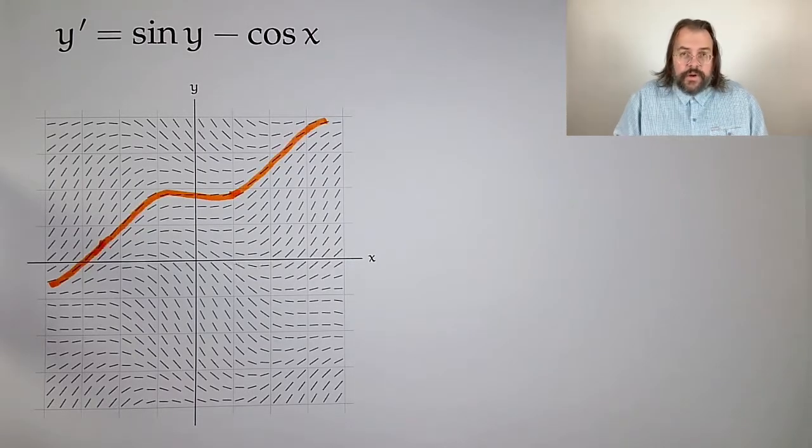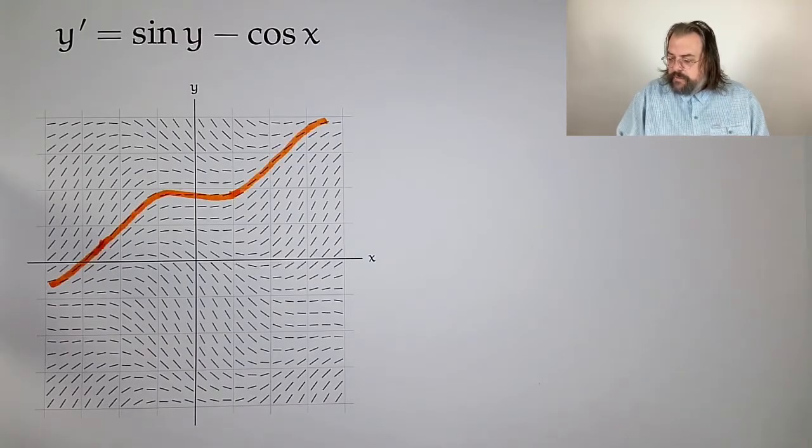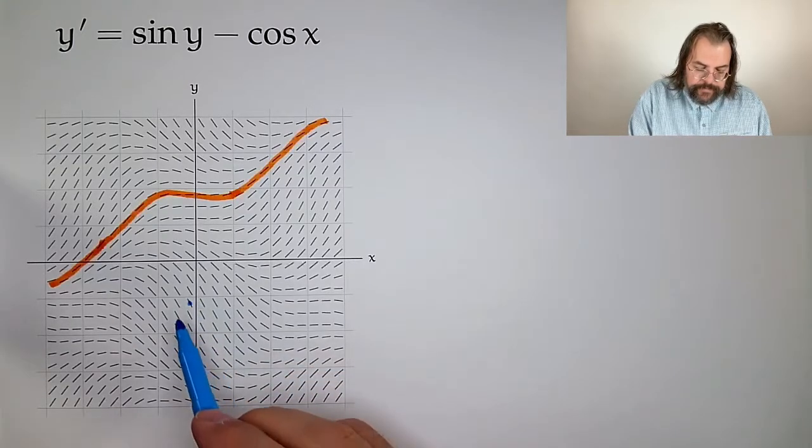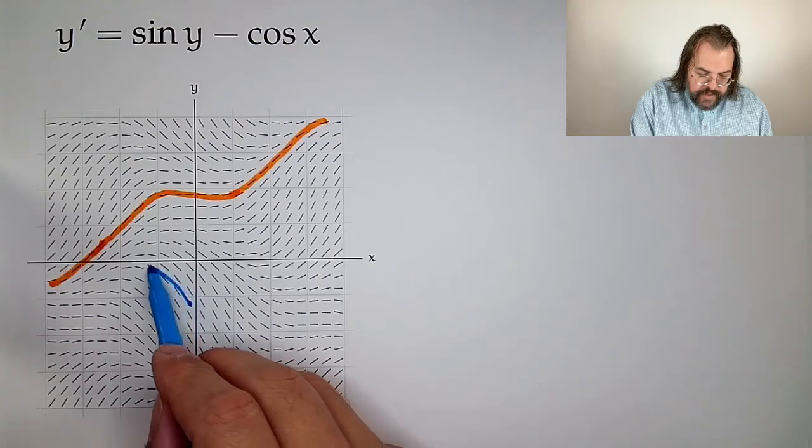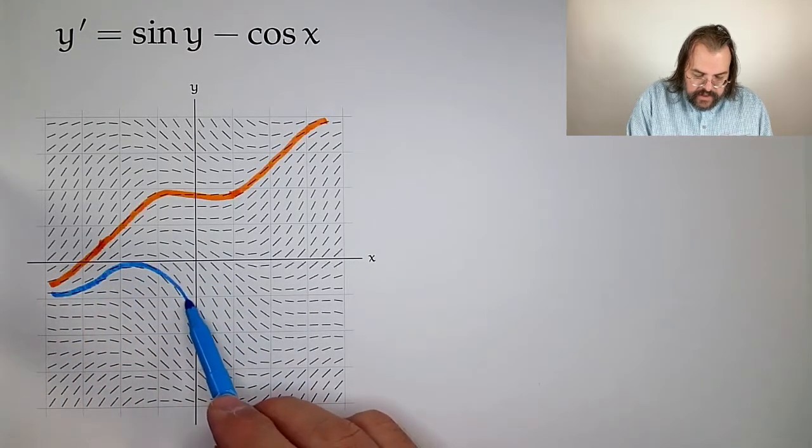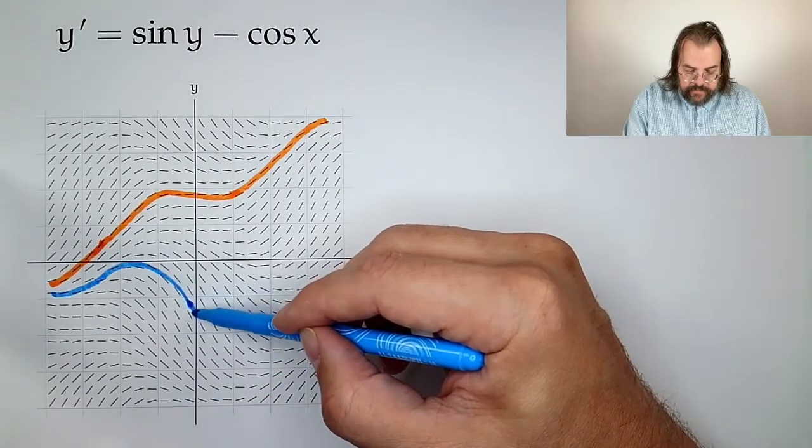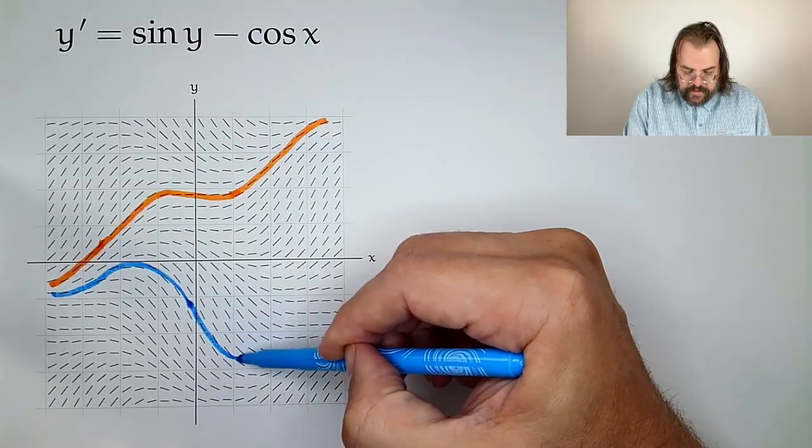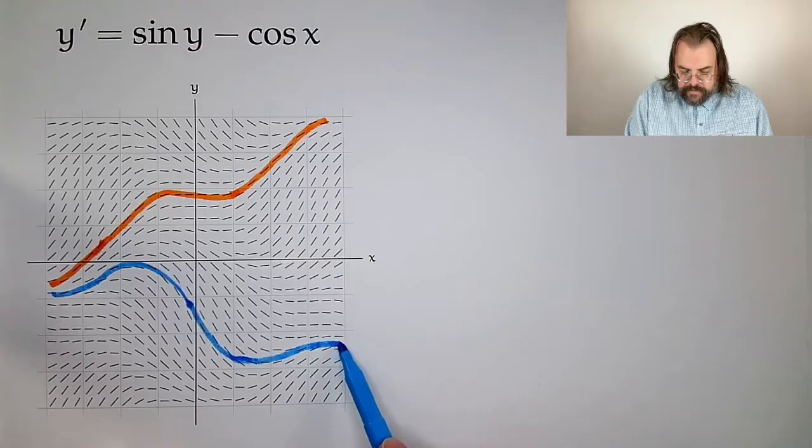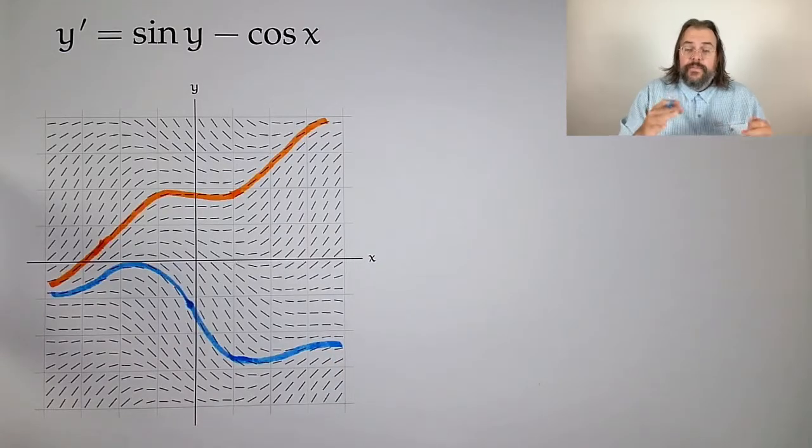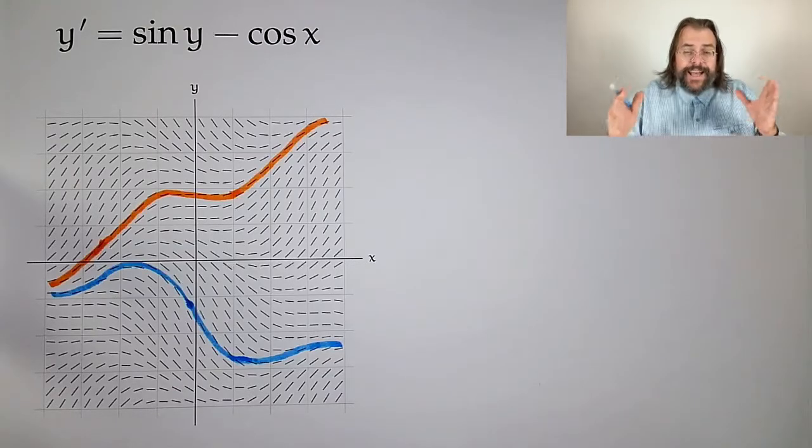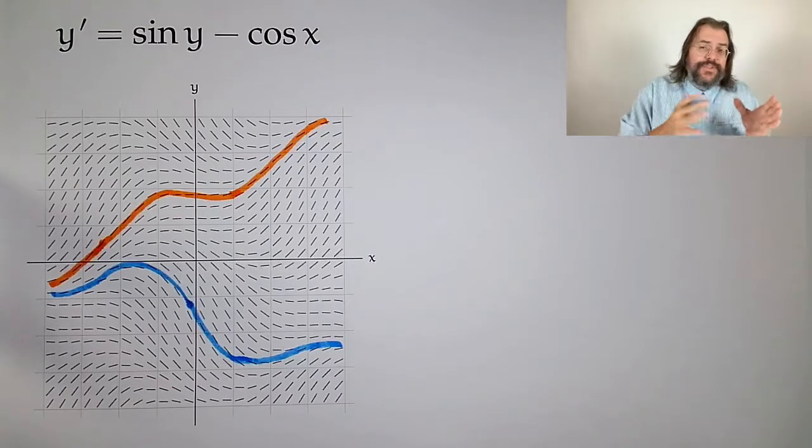We're doing this by eyeballing it in. Depending on where we start, we get different pictures. You can imagine starting over here: we're coming up, we're leveling off, we're coming down, we're leveling off again. Of course, in the other direction, we're coming down, but then we level off and go up a little bit, then possibly level off and so forth. We can do this for any starting point.